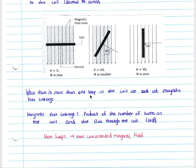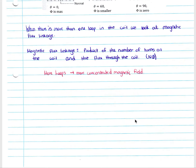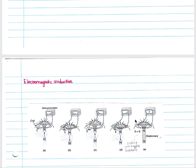When there is more than one loop in the coil, we look at magnetic flux linkage. With one loop of current carrying conductor you talk about magnetic flux, whereas with more than one loop of coil we look at magnetic flux linkage. Magnetic flux linkage is simply the product of the number of turns on the coil and the magnetic flux through the coil. The more loops we have, the more concentrated our magnetic field becomes.